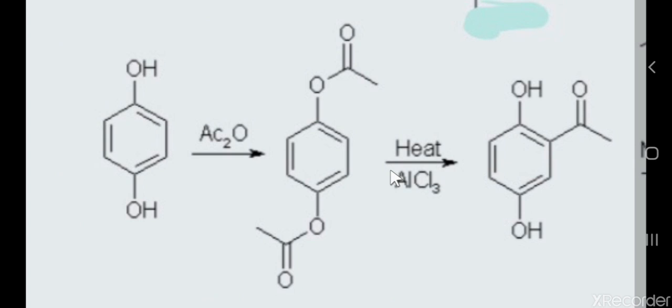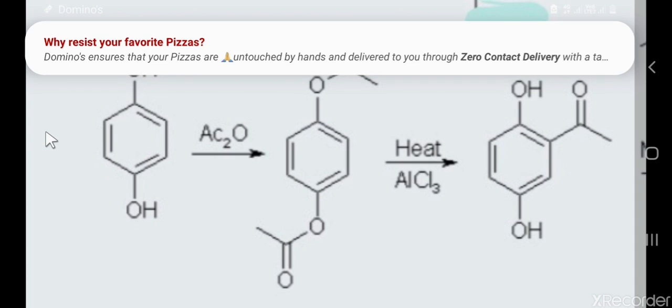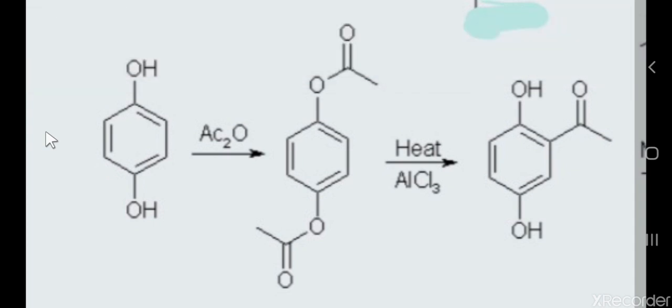This is the reaction for this experiment. This is hydroquinone. Most of the time students are confused with hydroquinone and benzoquinone — the names are similar, so don't confuse them. We treat hydroquinone with acetic anhydride, which forms the diacetate compound — both phenolic OH groups are acylated. Then heating in the presence of AlCl₃ converts this diacetate compound into the dihydroxyacetophenone compound. This is a named reaction — Fries rearrangement.